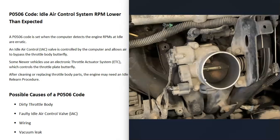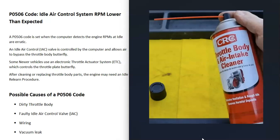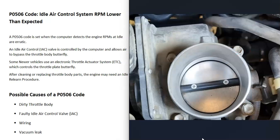A very common cause of this code is that the throttle body got really dirty and just needs to be cleaned. These throttle bodies around the butterfly plate can get really dirty, and quite often if you just clean them up it could get things working again. There's throttle body cleaner you can buy, and you can use a little toothbrush to get inside there and clean it up really well.